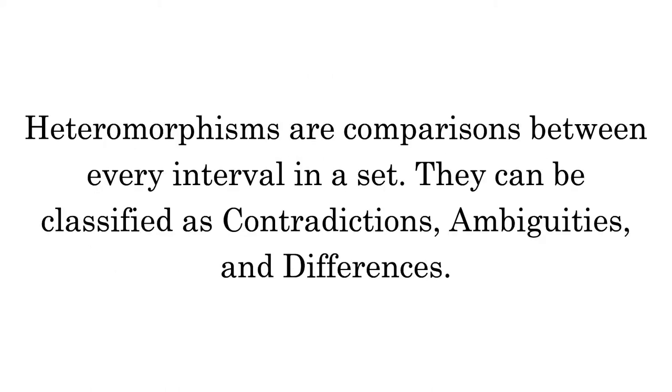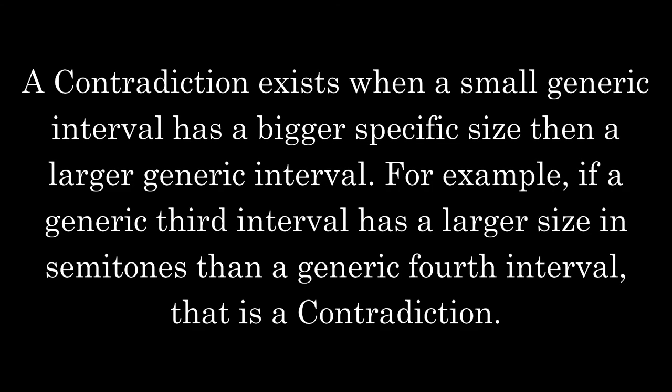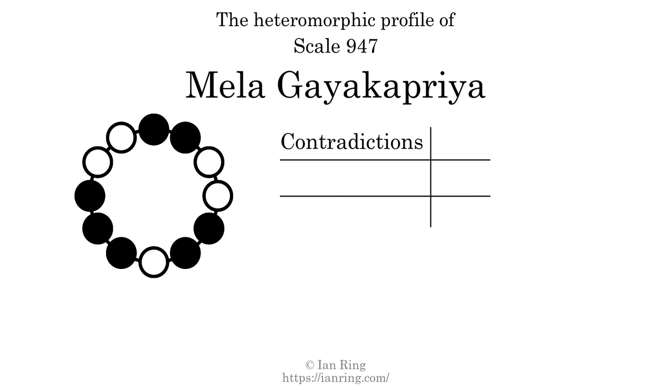Heteromorphisms are comparisons between every interval in a set. They can be classified as contradictions, ambiguities, and differences. A contradiction exists when a small generic interval has a bigger specific size than a larger generic interval — for example, if a generic third interval has a larger size in semitones than a generic fourth interval. The number of contradictions in this scale is 7.